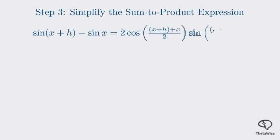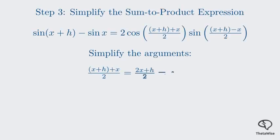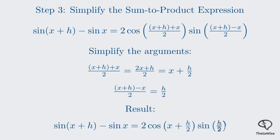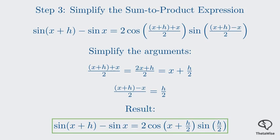Let's simplify the terms inside the cosines and sines. First, the term (x+h+x)/2 simplifies to (2x+h)/2, which is x+h/2. Second, the term (x+h-x)/2 simplifies to just h/2. Substituting these simplified terms back into our identity gives us sine(x+h) minus sine x equals 2 cosine(x+h/2) times sine(h/2).